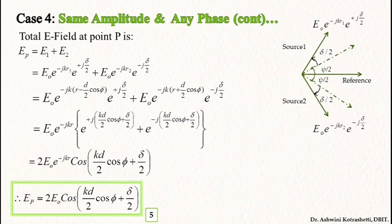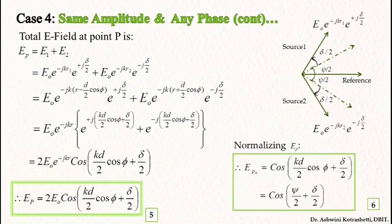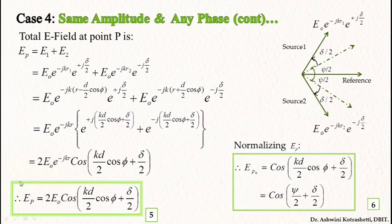Let us normalize the equation. Note that I have not explicitly shown the step of taking the modulus of eP since that is understood by now, and hence I have skipped that step. After normalization, the normalized electric field is cos(psi/2 plus delta/2).